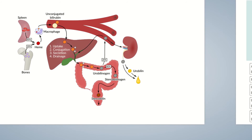Now back to the liver. The conjugated bilirubin in the liver not only exits the hepatocyte through the bile ducts, but it can also re-enter the bloodstream. That's why conjugated bilirubin can be detected in the plasma of healthy individuals, though only small amounts are usually present. Approximately 10–20% of plasma bilirubin is conjugated, whereas the majority — the remaining 80–90% — is unconjugated and returned to the liver.